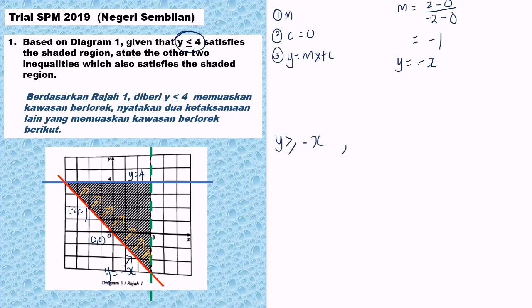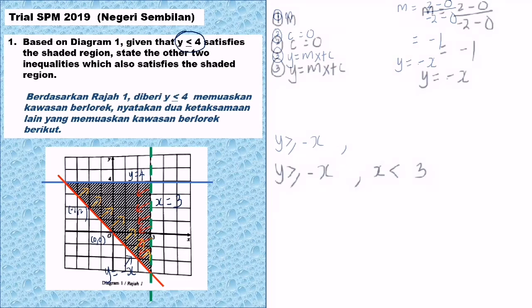This third straight line is a vertical line passing through the x-axis at 3, so its equation is x equals 3. Checking the shaded region, the values of x in the shaded region are less than 3. The inequality is x less than 3. We cannot write 'or equal to' because the line is a dotted line.